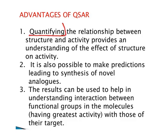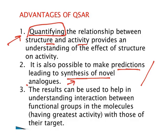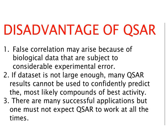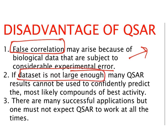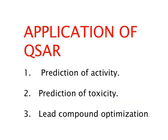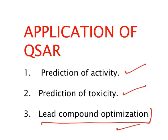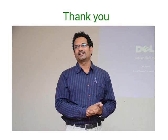Advantages of QSAR: it quantifies the relationship between structure and activity; it allows predictions leading to the synthesis of new drugs; and the results help understand interactions between functional groups and molecules with their targets. Disadvantages: false correlation may result from experimental error, leading to false molecules; a large enough data set is needed; and QSAR may not always yield a positive result. Applications include predicting activity, predicting toxicity, and lead compound optimization.